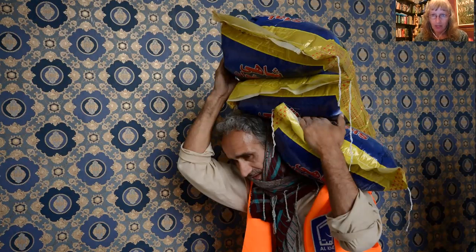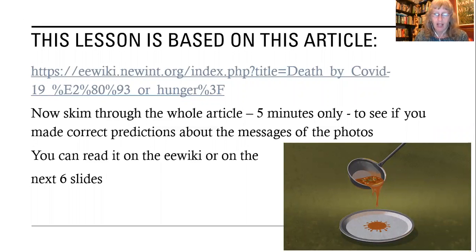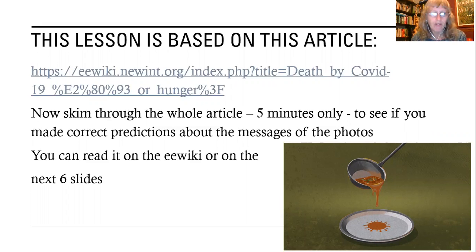All these photos are from the article. Here is a link to the article — if you prefer, you can read it on the easier English wiki. That's eewiki.newint.org. Search for 'death by COVID or hunger' and you'll find it, or use this link. I want you to now read the article very quickly — just skim through. Don't read for detail, only five minutes, to see if you got the right messages from the photos.